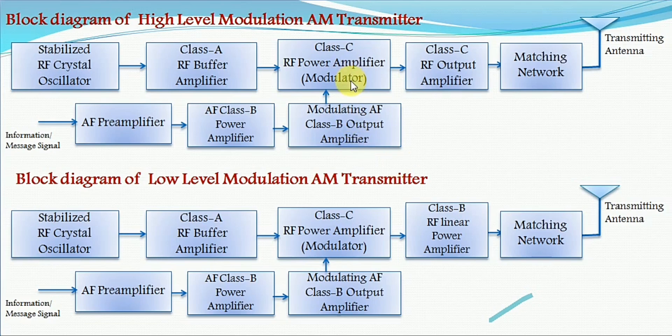Thereafter, it is applied to the modulator. The modulator superimposes the message signal onto the generated carrier signal using amplitude modulation, and hence the output of the modulator is an amplitude modulated wave. So at this point, we obtain an amplitude modulated wave.